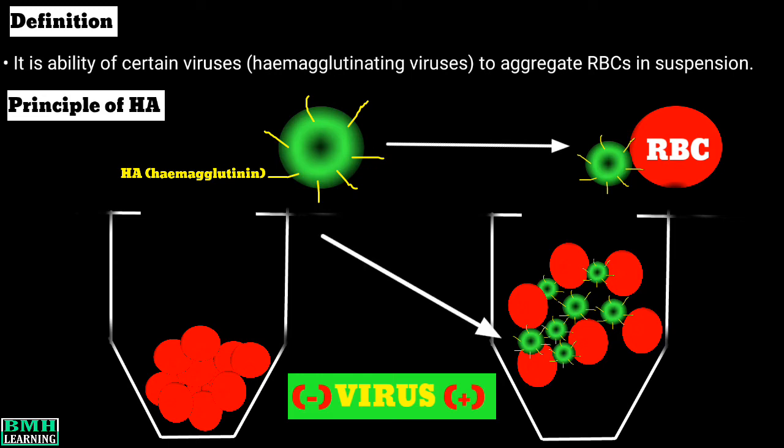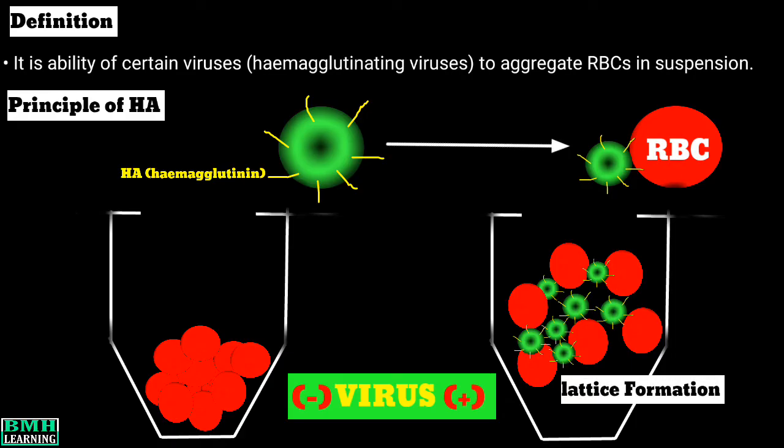This interaction leads to a lattice formation, in which case the RBCs are dispersed as a clump, so the red dot is not formed.